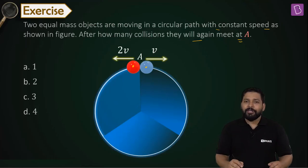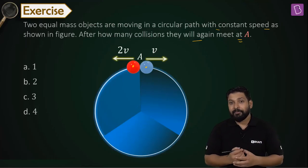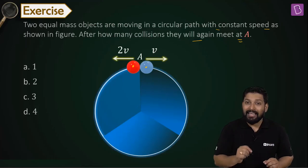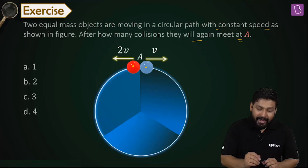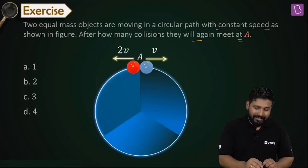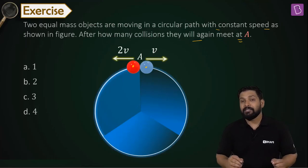Let's come back to this question. How many collisions do you think before they meet again at point A? You have got option A as one, option B is two, option C is three, and option D is four.